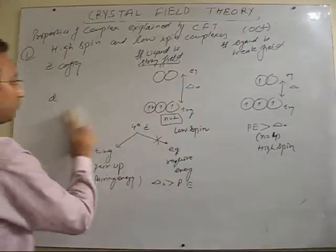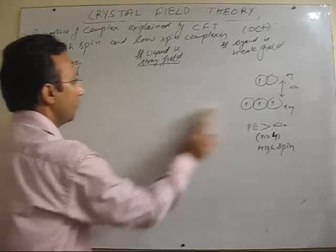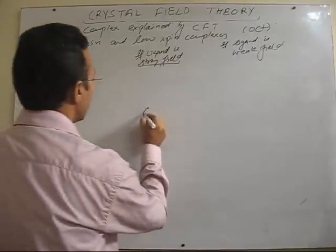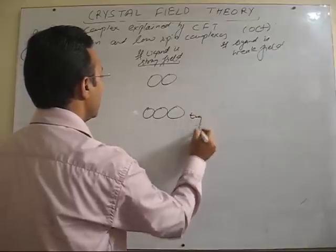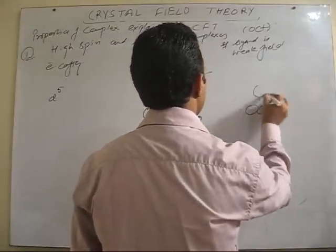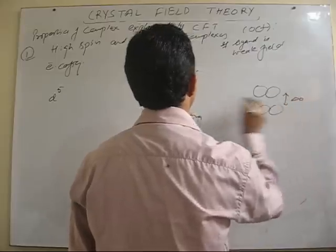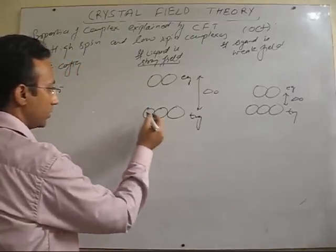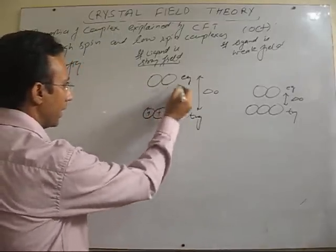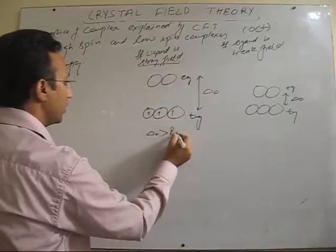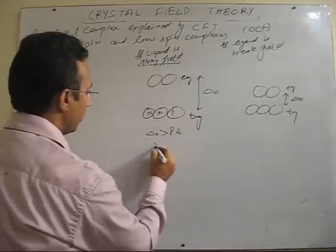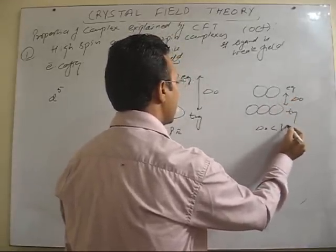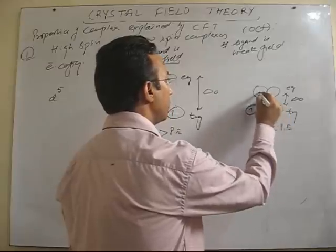So let me have another arrangement here that is arrangement of D5. So in case of D5 also, you have here T2G, EG, weak field, small gap delta naught. T2G and EG set of orbitals. Here again, 5 electrons are to be filled: 1, 2, 3. Gap is more, delta is very high as compared to the energy required to pair the electrons, so they will pair. So number of unpaired electrons.